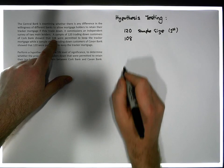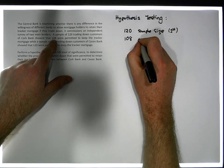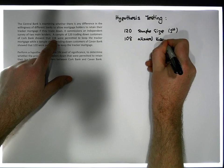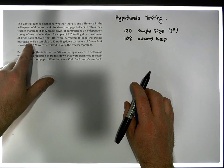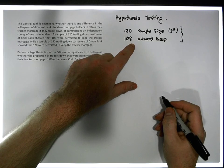So we have 108 of them customers were allowed to keep their tracker mortgage. These two things here are tightly coupled together. That's the information for the first sample.